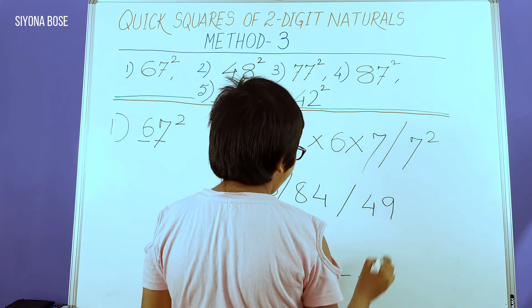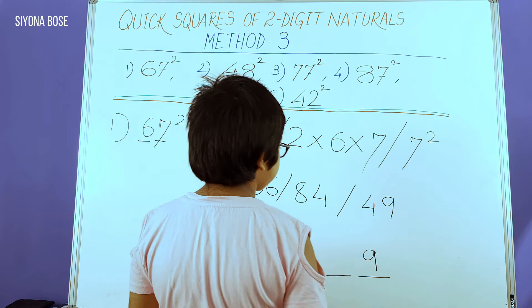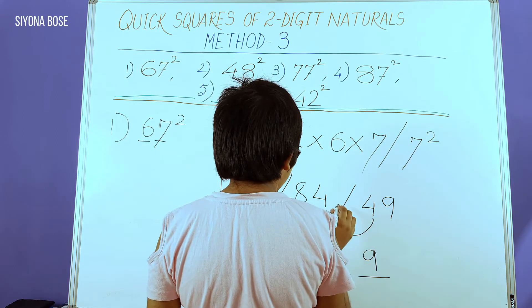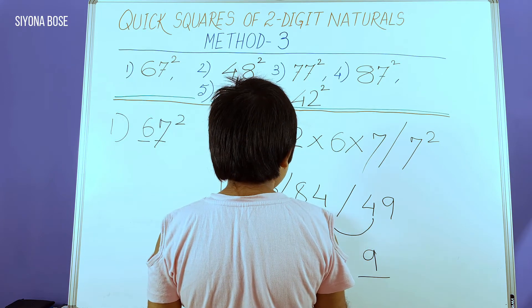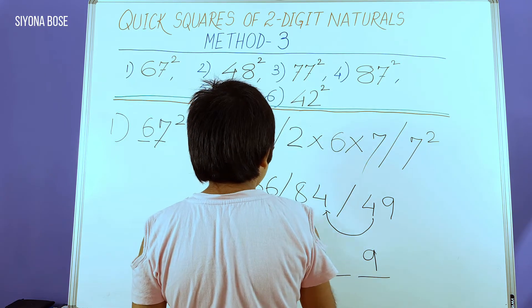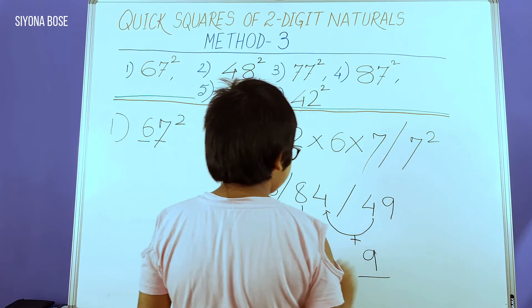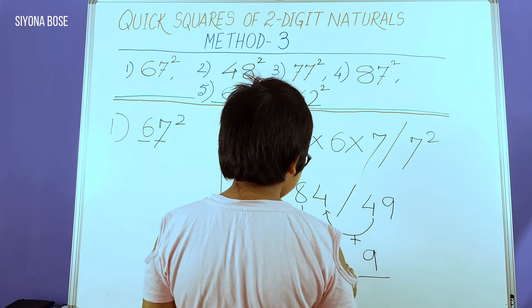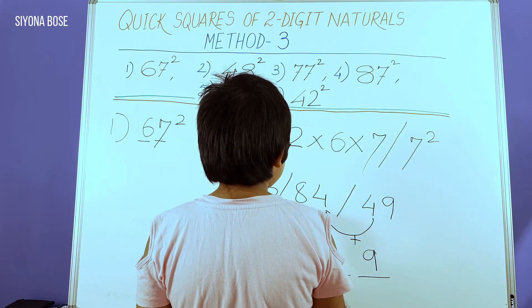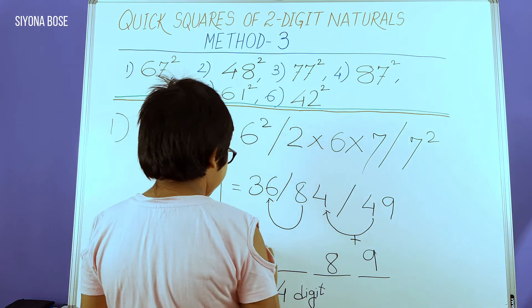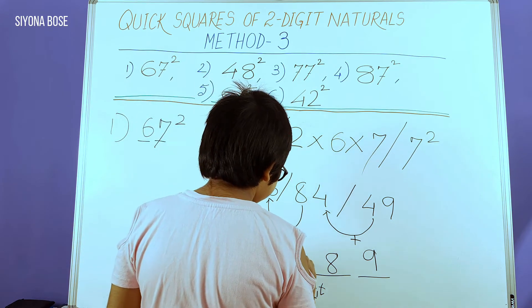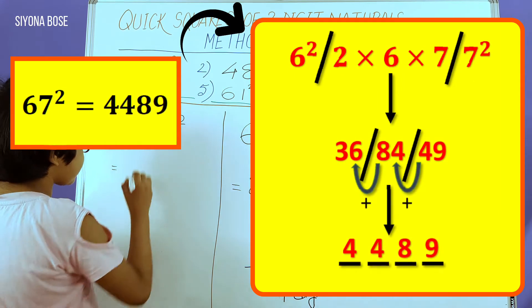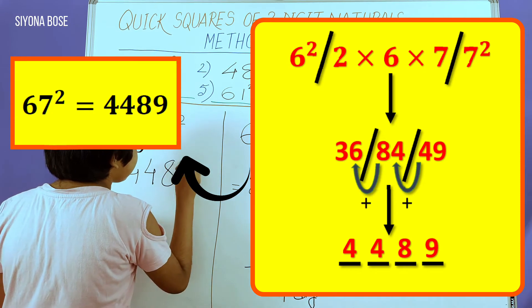First, we keep the 9 as it is in the ones place. This 4 has to be added to the 4 of 84. The 8 has to be separately added to 36. First, we add this 4 to get 8. We write that 8 in the tens place. The 8 is then added to 36 to get 44. Ultimately, 67 squared gives us 4489.